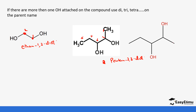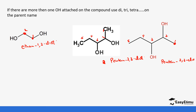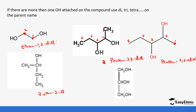Then we have this: we start from this side because it gives the lowest numbers — one, two, three, four, five — so it's still pentan-2,3-diol. Then this one we have done before — it's propan-2-ol, that's just one OH. Finally, with three OH groups and three carbons, it's going to be propane-1,2,3-triol — which is actually a glycerol — we will come to that later.